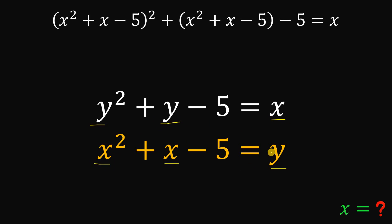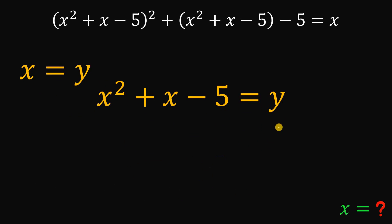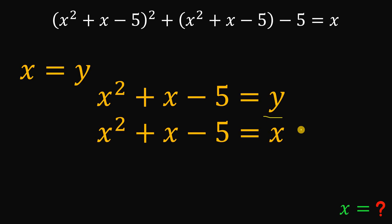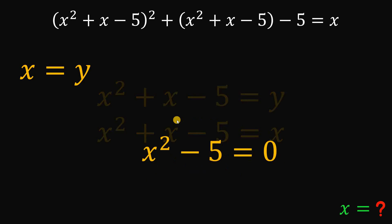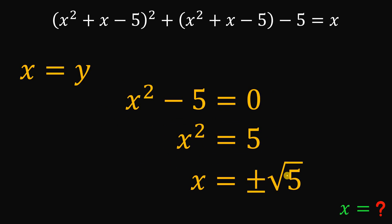The only difference is we have y in the first equation and the corresponding variable x in the second equation. So we can say that x equals y. Now, if x equals y, we can solve for the value of x by replacing y with x. Then, subtracting x from both sides, we get x squared minus 5 equals 0. Adding 5 to both sides and taking the square root, we get x equals positive or negative square root of 5.